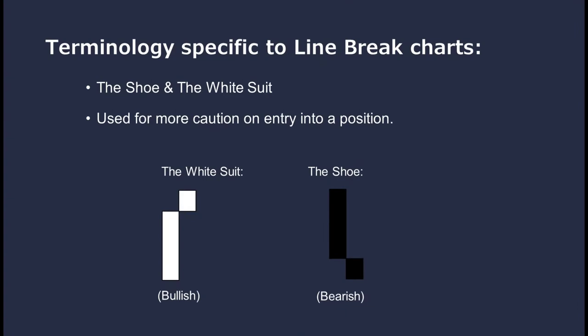Some peculiar terminology specific to line break charts: the 'shoe' and the 'white suit.' These are used for more cautious approaches to entering a position. The white suit is a bullish move — we have our reversal line followed by a smaller bullish line, and some traders wait for that line to play out before entering a long trade. The shoe is the vice versa setup — our down reversal line followed by a small bearish line, and when that concludes traders go short. It's a more patient approach to using the line break chart entry reversal method.